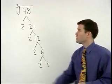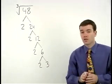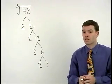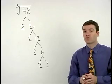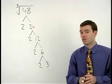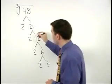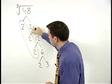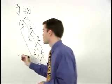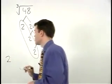The difference with a cube root is that instead of looking for pairs of factors that are the same, we're looking for groups of three factors that are the same. And here you'll notice that we have a group of three twos. So a 2 will come out of the cube root.